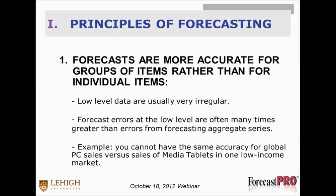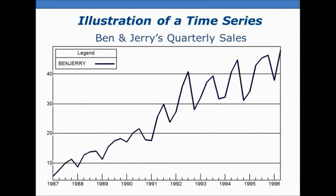For example, you can't have the same accuracy for global PC sales versus sales of media tablets in one particular market. A lot of times I'll hear executives say, we're pretty good on the whole, but we don't do as well once we get down to the DC level — of course not, because forecasts are more accurate for groups of items. To illustrate, I want to show you three diagrams that show data at the most aggregate level and then disaggregated, so you can see this irregularity.